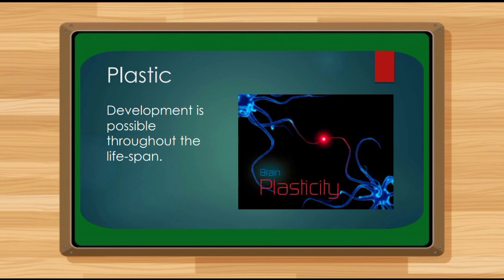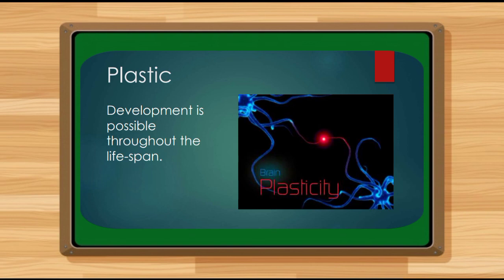The next characteristic of the lifespan approach is that it is plastic. Not 'plastic' as in fake, but development is possible throughout the lifespan. As I said, in the lifespan approach development is possible throughout all stages and does not stop at any one stage. Development is plastic — no one is too old to learn. We should not use age as a reason not to learn, because according to the lifespan approach, development continues throughout the lifespan. Neither Kian nor Brian will be too old to learn something. That is plasticity as one of the characteristics of the lifespan approach.